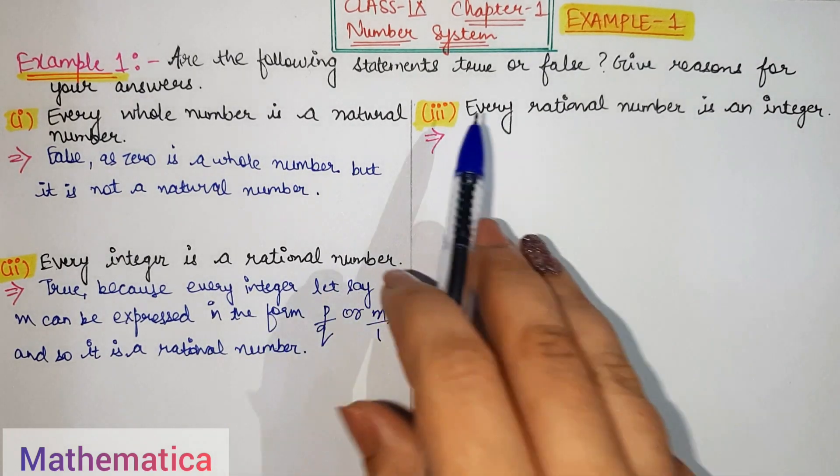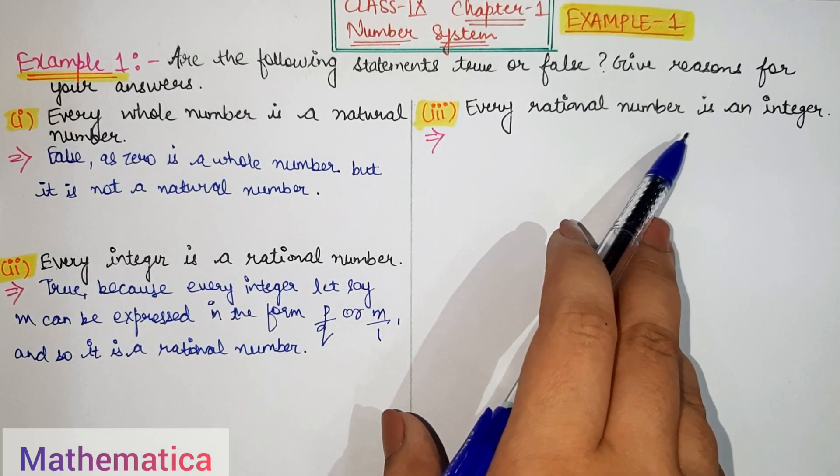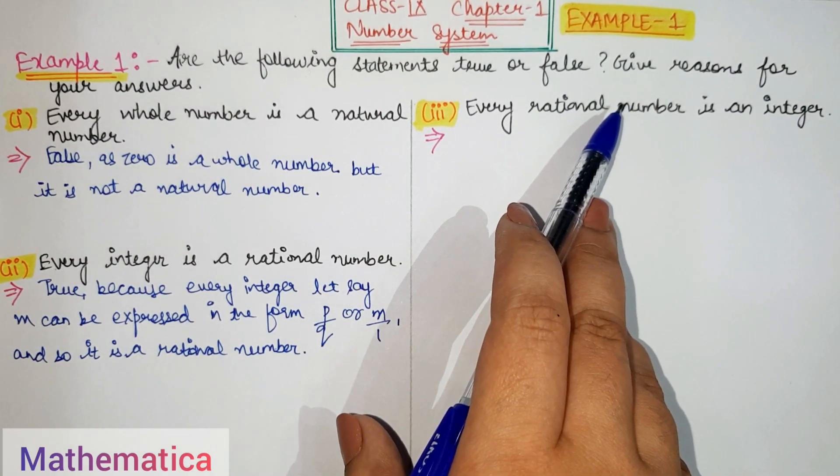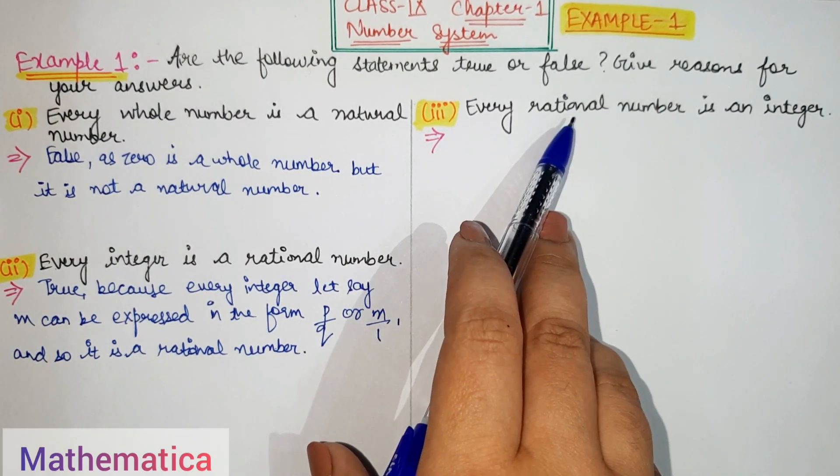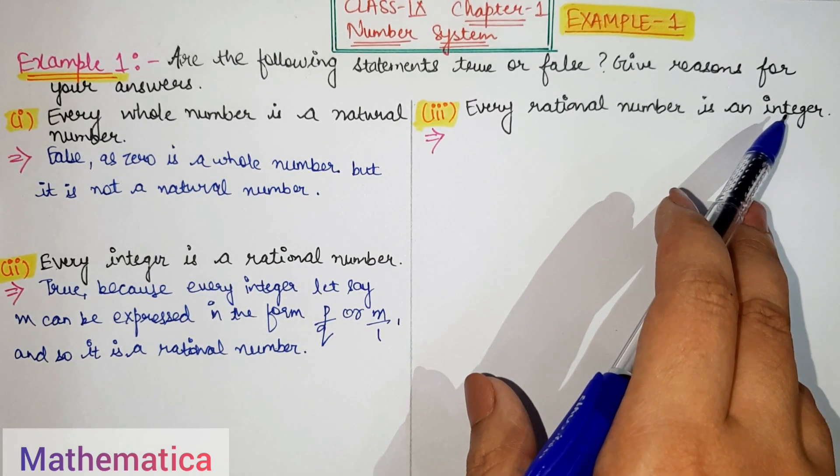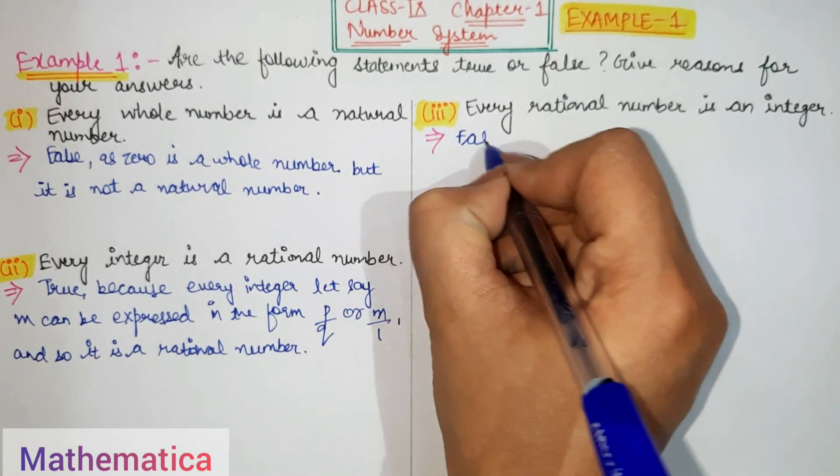Next part is: Every rational number is an integer. We have already studied this. Rational number is one which is in P by Q form. So can we call 2 by 7 an integer? No, we cannot. So the answer is false.